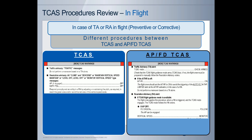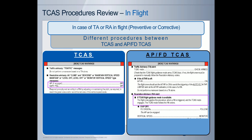Now, in flight, we are going to see that in case of TA or RA, the procedures to apply are different on the standard TICAS and on the APFD-TICAS. On aircraft equipped with the standard TICAS, the pilot must disconnect the autopilot and the FD bars in order to follow the TICAS orders. The main difference with the APFD-TICAS function is that in case of RA, the pilot will have the FD bars automatically engaged and will monitor the maneuver with autopilot and autothrust engaged. This is what we are going to review now through an operational scenario.